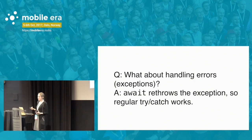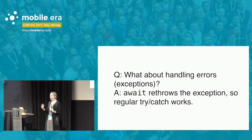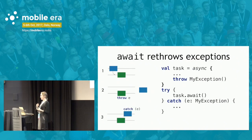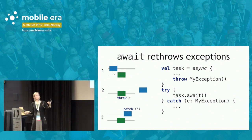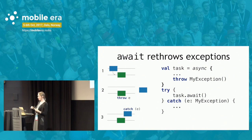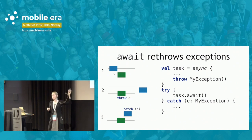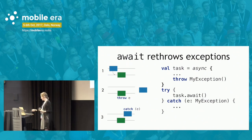You may ask: what about exceptions? The answer is that await throws the exception, so regular try/catch works. Your code looks like regular code — you use all the usual try/catch constructs, for loops, etc. For instance, here is an example where an exception is thrown in one coroutine/thread and caught in another coroutine/thread, and it just works. You write your code in the usual regular style.